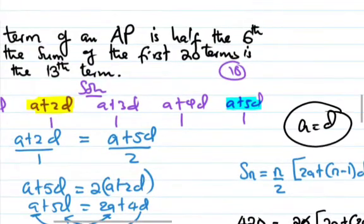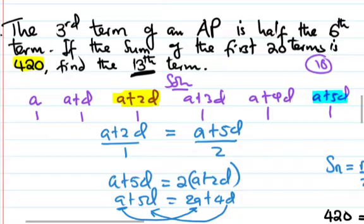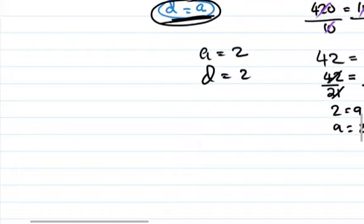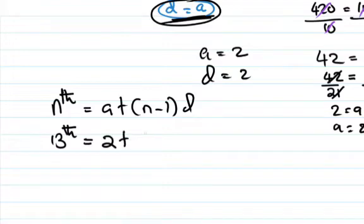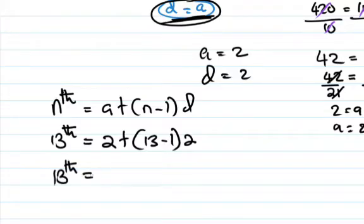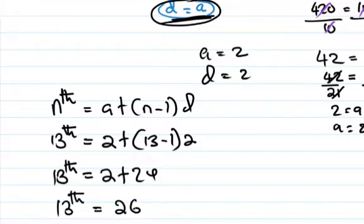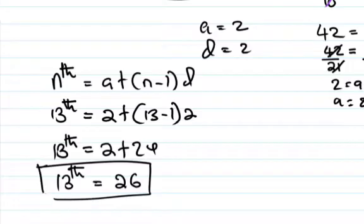We can now answer the question. The 15th term will be equal to a + (n-1)d. So the 15th term is 2 + (15-1) times 2, which is 24. So the 15th term is equal to 26.